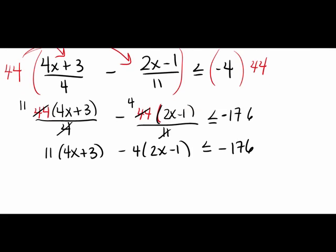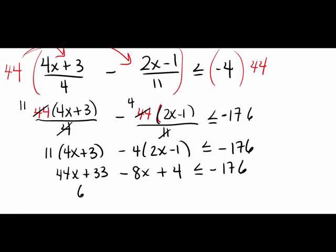Proceeding from there, we distribute through the parentheses: 44x + 33 minus — remember to distribute that negative — minus 8x + 4, because negative times negative is positive, is less than or equal to negative 176. Now combining like terms on the left: 44x minus 8x gives us 36x, and positive 33 plus positive 4 gives us positive 37.